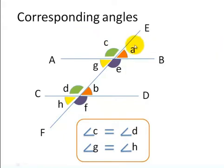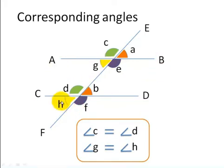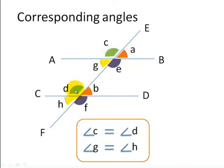Angle A and angle B are corresponding angles — it's almost as if this shape has been moved straight across. Note that AB and CD are parallel lines, and EF is a transverse line cutting through them. When line EF cuts through the two parallel lines AB and CD, angle C equals angle D, angle G equals angle H, angle A equals angle B, and angle E equals angle F — because they are corresponding angles, and corresponding angles are equal.